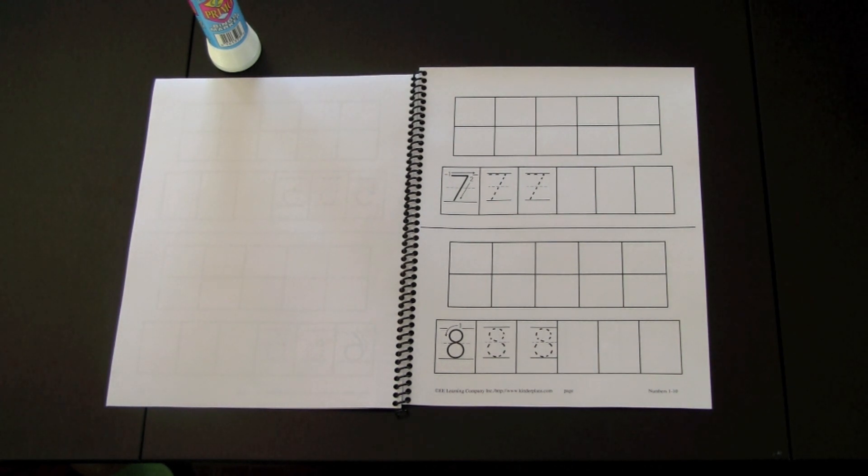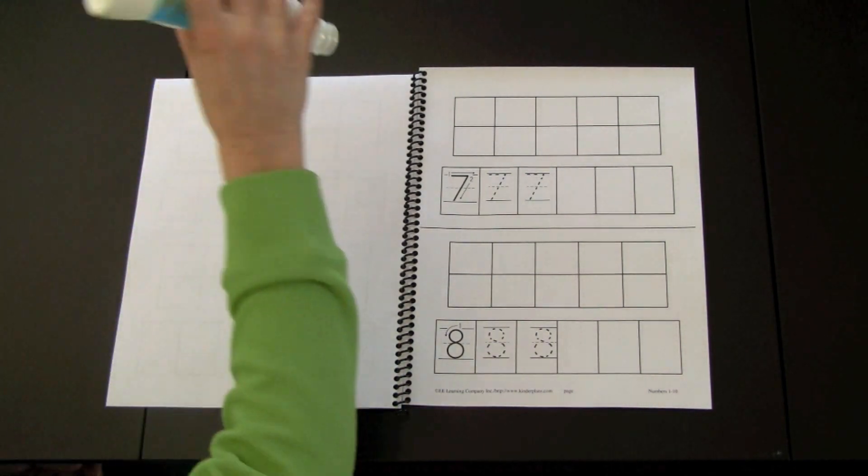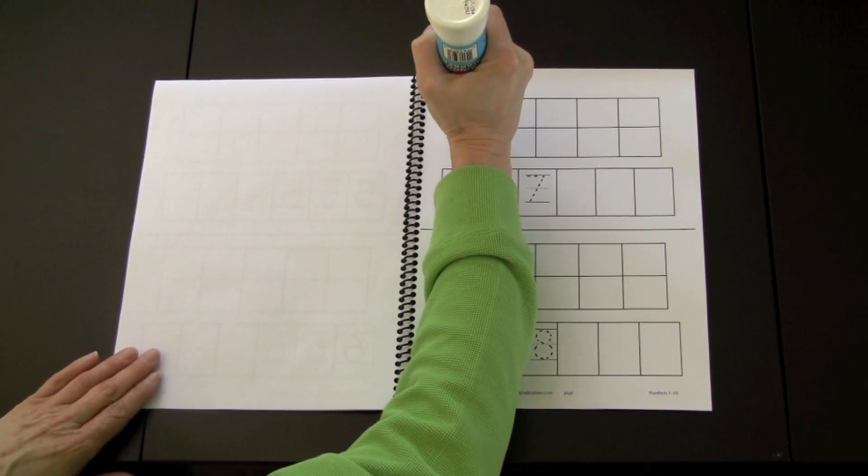That's when they are ready to work in their printing book, which is provided in the program. They would show the ten frame form of number seven by using a bingo marker.